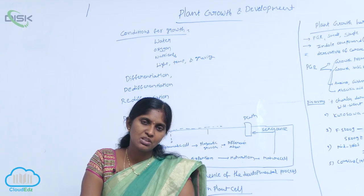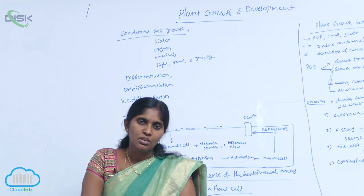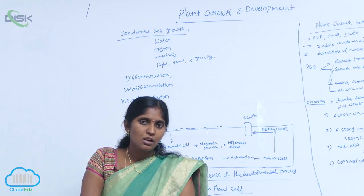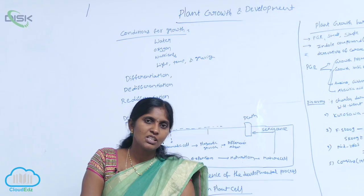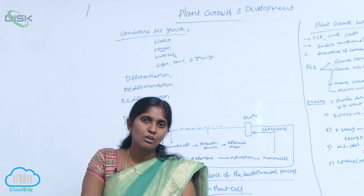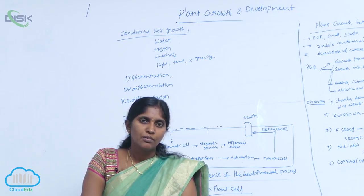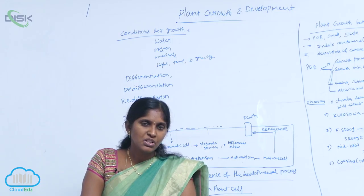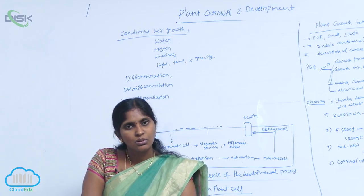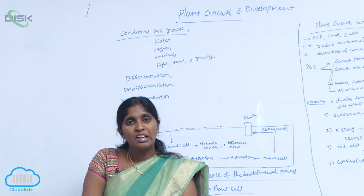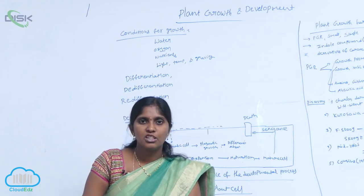After de-differentiation, the de-differentiated cells also lose the capacity of dividing. They are meant for one specific function — they are allotted to that specific function. This is called re-differentiation.